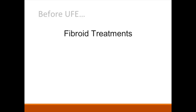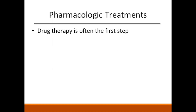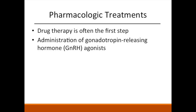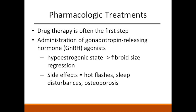Until the introduction of UFE, most gynecologic approaches to fibroids were centered either on hormonal treatment to control symptoms, or surgery to remove the fibroids or the uterus that houses them. Hormonal therapy is often the first step. Administration of GnRH agonists produces a hypoestrogenic state which causes fibroid size regression, but also unfavorable hot flashes, sleep disturbances, and bone changes.